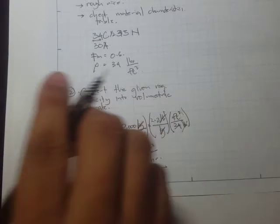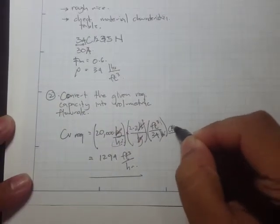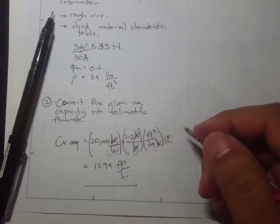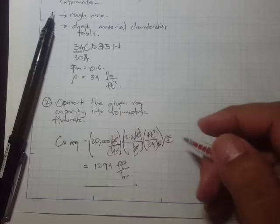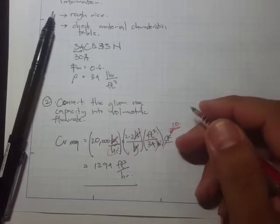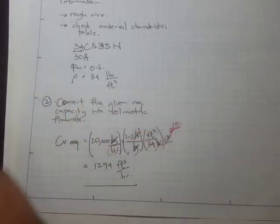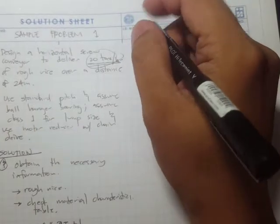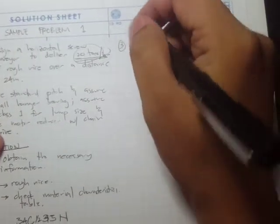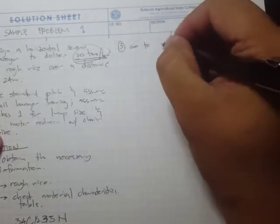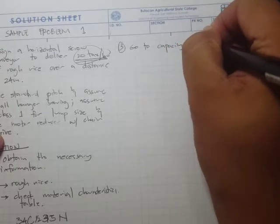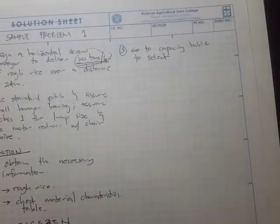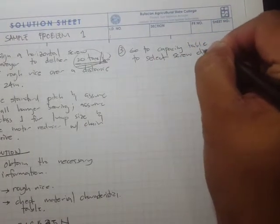Since we have standard flights and standard pitch, the capacity factor is 1.0. Now with the required capacity known, we can go to the capacity table to select the screw diameter and RPM. Note that our trough loading is 30 percent A, meaning non-abrasive.